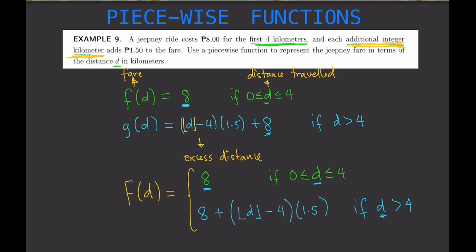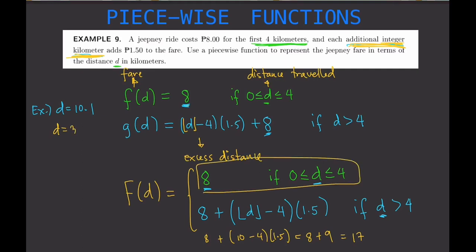For example, if d is 10.1: the floor of 10.1 is 10, so the fare is 8 plus (10 minus 4) times 1.5, which is 8 plus 6 times 1.5, equals 8 plus 9, giving 17 pesos. So you pay 17 pesos if you travel 10.1 kilometers. But if d is equal to 3, you use the first formula since 3 is within that interval, so your fare is simply 8 pesos.